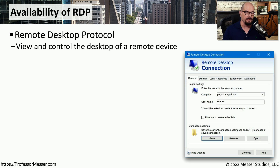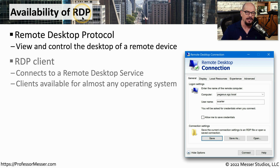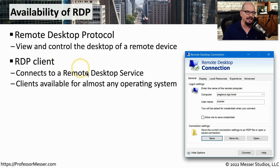If you do need support for your computer, a technician can connect to your device and control it from across the network. In Windows, this is done through the use of Remote Desktop Protocol, or RDP. This allows someone to connect and control the desktop of a Windows device from across the network using an RDP client, which connects to a service running on the remote device. There is support for RDP clients on many different operating systems, so regardless of what you're using, you can connect to a Windows machine using RDP.